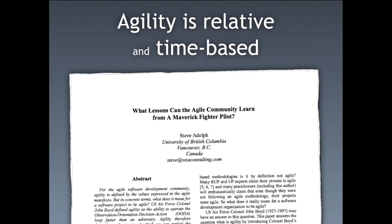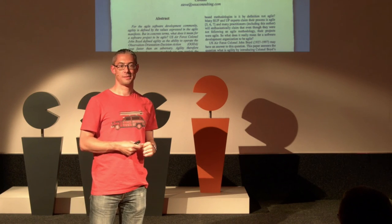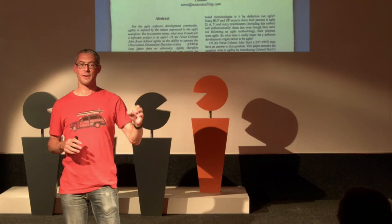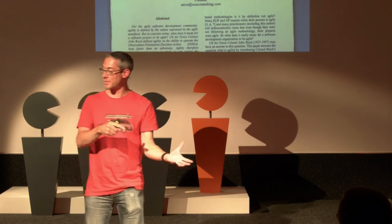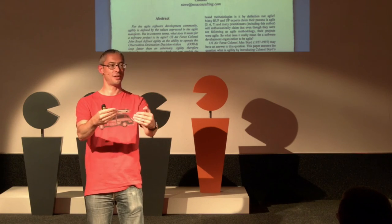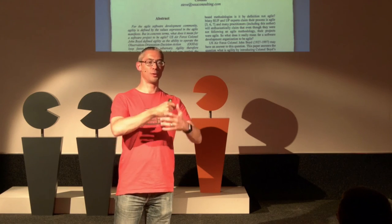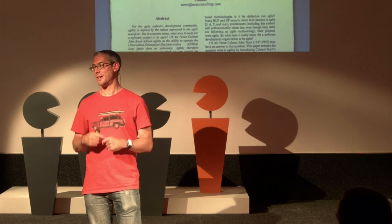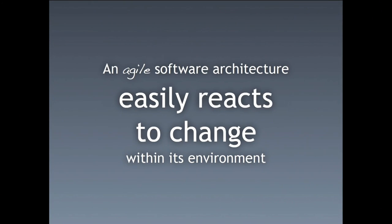There's a great paper that takes this OODA loop concept and applies it to the software development world. The conclusion is: agility is relative and time-based. For example, if you work for a very big, slow-moving organisation and you can release software quicker than that organisation changes its business process, you are by definition relatively more agile than the environment. Conversely, if you're doing the lean startup thing and can't push code more than once a week but want to push new features every day, you have less agility than the environment. So for me, an agile software architecture is one that reacts to change within its environment with a minimum of effort.